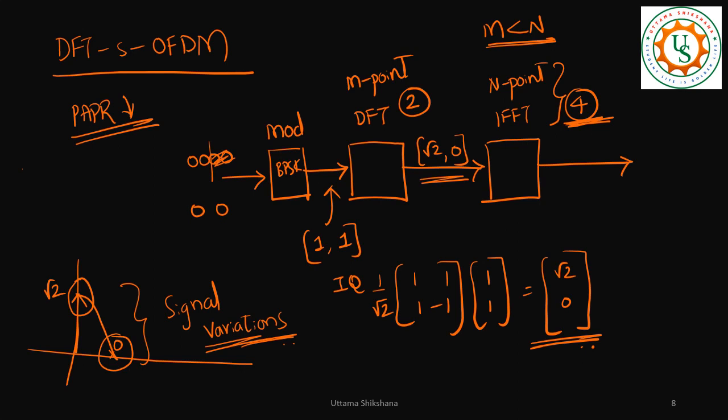So I will take here, my input is √2, 0. I will do some zero padding because we need 4-point. So finally, I have 4 points to this IFFT block.